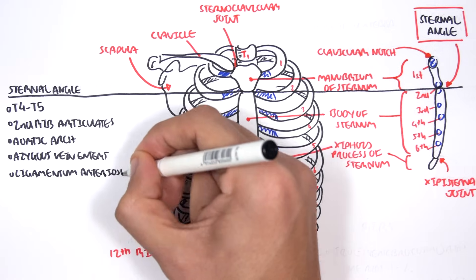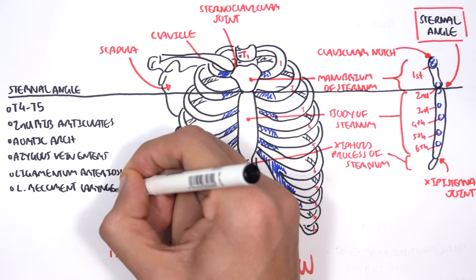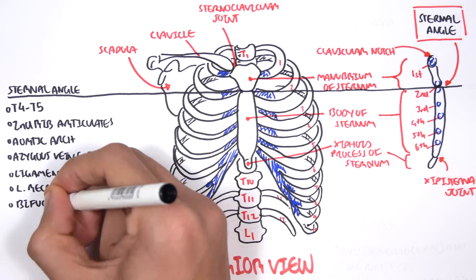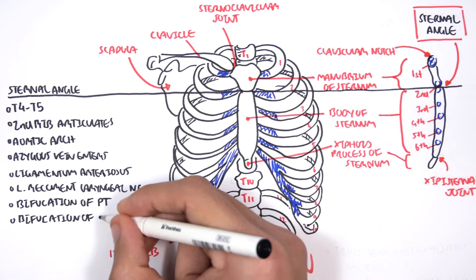We have the ligamentum arteriosus. We have the left recurrent laryngeal nerve. We can also find the bifurcation of the pulmonary trunk and bifurcation of the trachea.